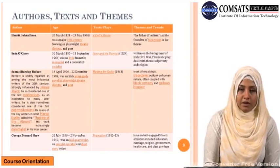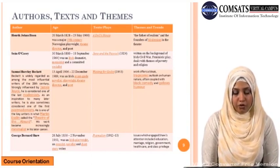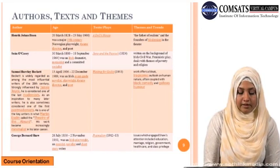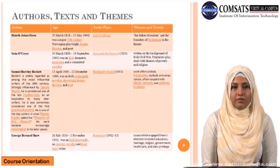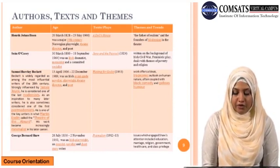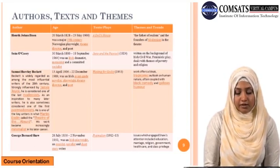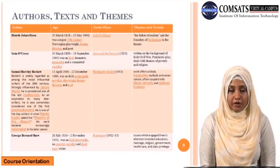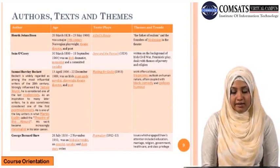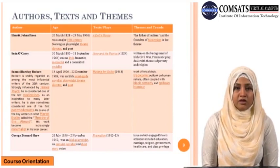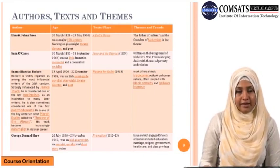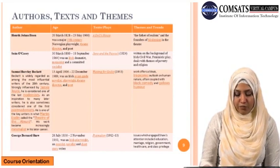The fourth and last drama will be Pygmalion, written by George Bernard Shaw. George Bernard Shaw was an Irish playwright, essayist, novelist, and short story writer. The issues Shaw covered in Pygmalion were education, marriage, religion, government, health care, and class division. One very famous theme is middle class morality — again a debate on class division in society. That covers the texts, authors, and themes we will study in Modern Drama 2.